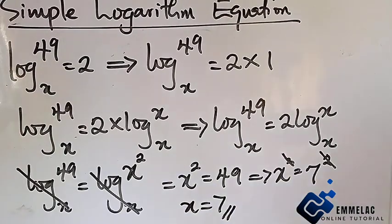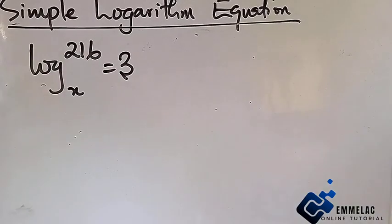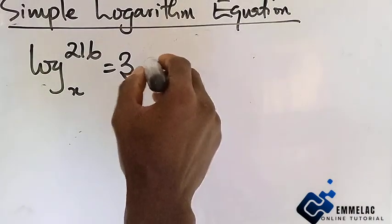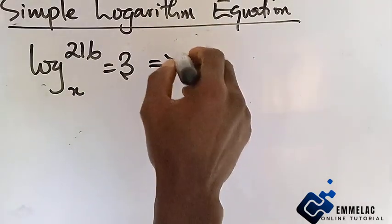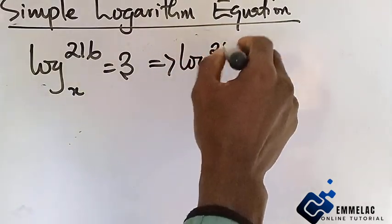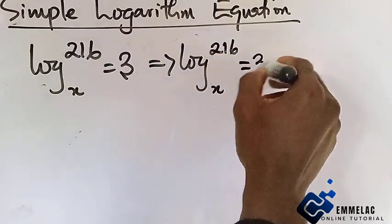Let's take another example for better understanding. Here's example number 2. Following the previous example, this is just very simple: log 216 base x gives you 3 times 1.